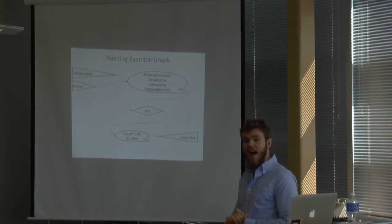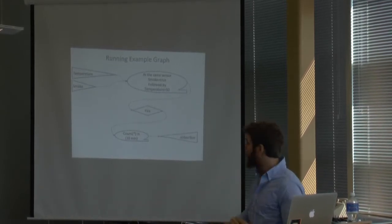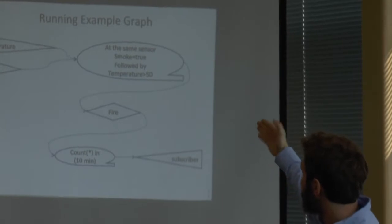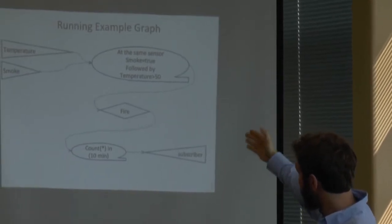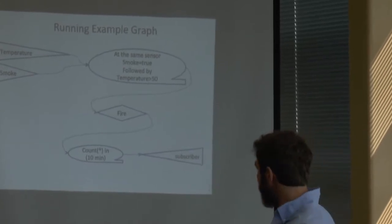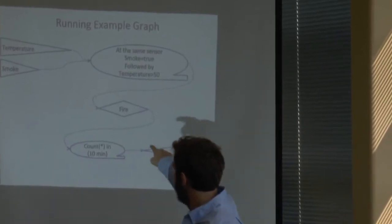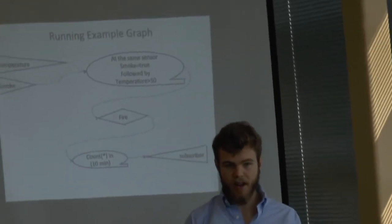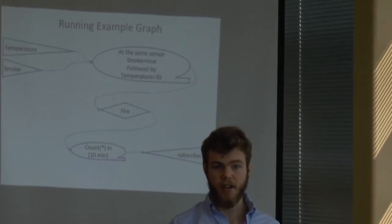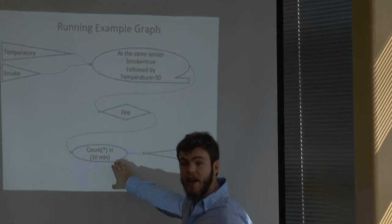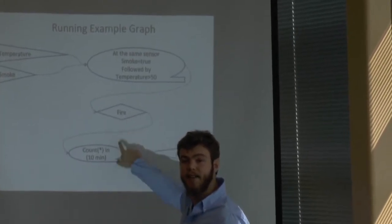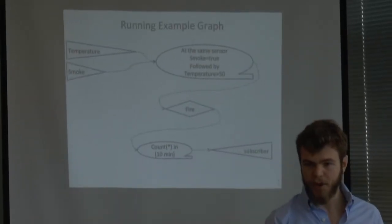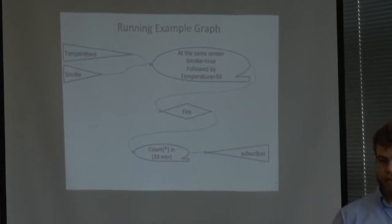This is the representation as a graph of our problem. We have two data sources: temperature and smoke sensors. We have a query for the same sensor that detects true for smoke and temperature more than 50 degrees. We have a listener that gets results from the query and says it's time to trigger a fire event. Then we have another query which counts the number of events and tells the subscriber when we've reached the result you want to know.